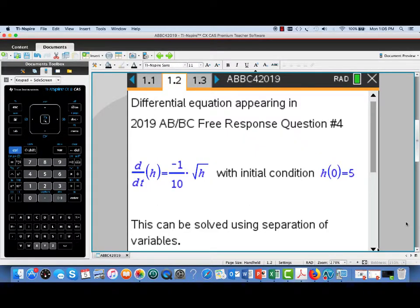We're going to use as an example the Differential Equation that appeared in the 2019 AB and BC Free Response, question number four. This problem involved a barrel of rainwater, and the height of the water in the barrel satisfied the Differential Equation dH dt equals negative one-tenth square root of h.